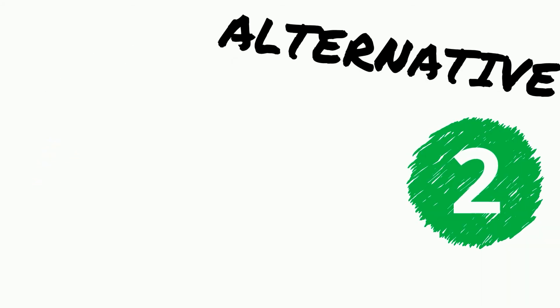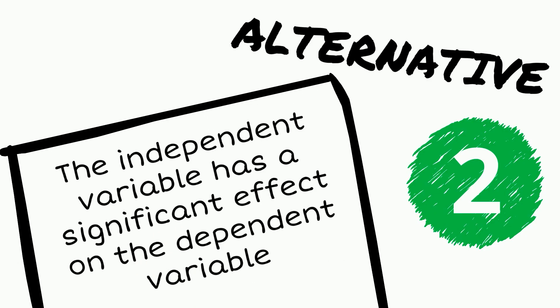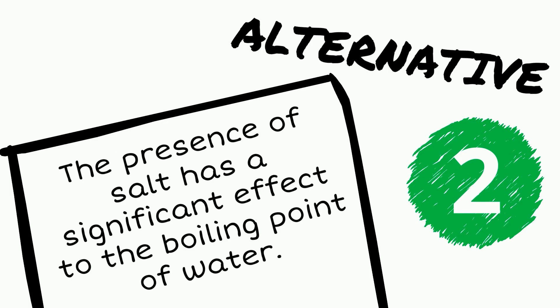Alternative hypothesis is the opposite. It states that the independent variable has a significant effect on the dependent variable. For example, the presence of salt has a significant effect on the boiling point of water.